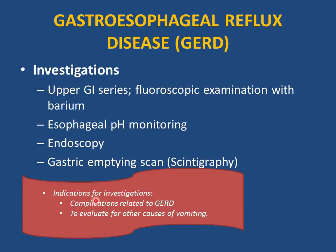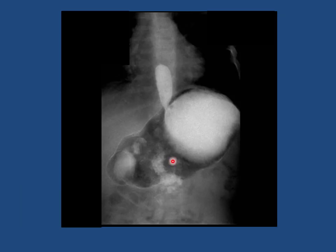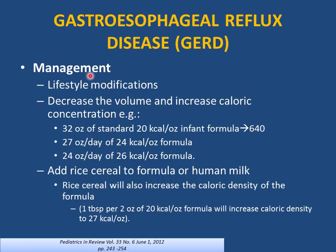Indications for investigation in GERD include complications related to GERD or the need to evaluate for other causes of vomiting. Investigations may include upper GI series — which can show reflux — esophageal pH monitoring, endoscopy, and gastric emptying scan. A barium swallow showing barium in the lower third of the esophagus is a case of mild reflux.